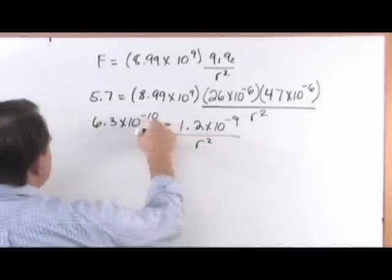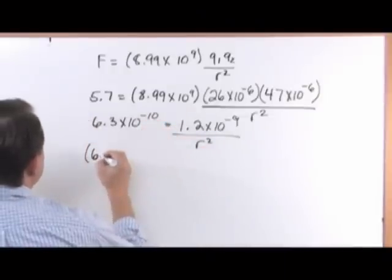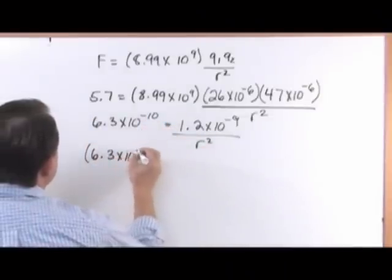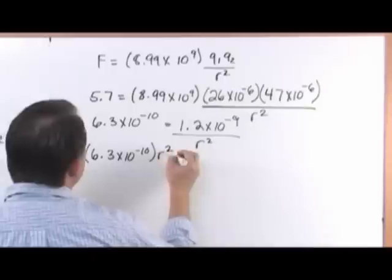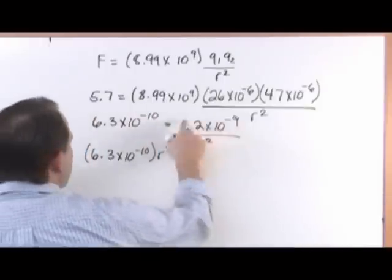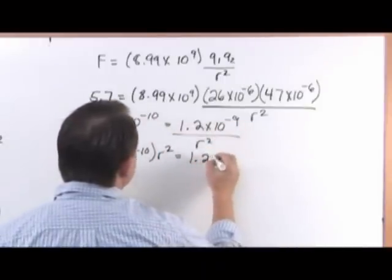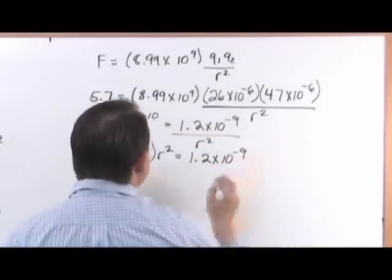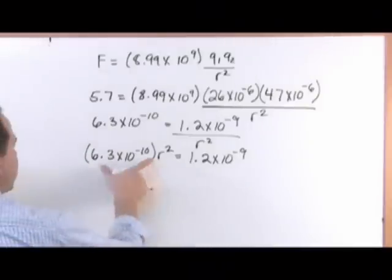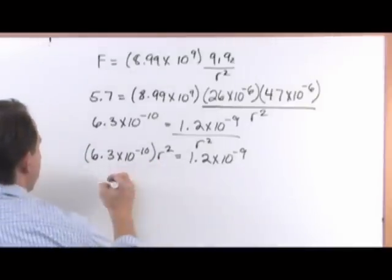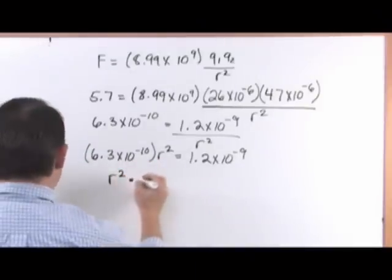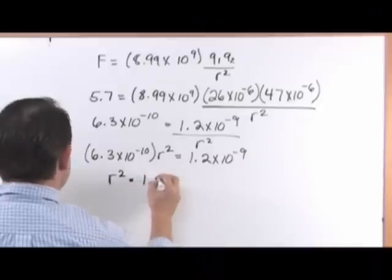So to solve for R, let's multiply by R squared, so we get 6.3 times 10 to the negative 10, R squared. On the right, we're just going to be left with 1.2 times 10 to the negative 9. So to solve for R squared, we'll just divide both sides by this, so R squared will equal 1.9.